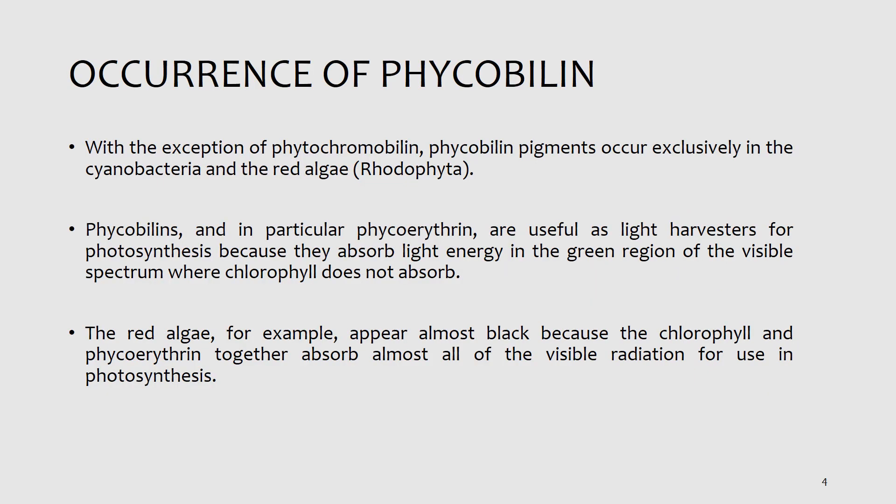Phycobiliin pigments are not found in higher plants, but occur exclusively in the cyanobacteria and in the red algae, where they assume a light harvesting function in photosynthesis. Phycobiliins, and in particular phycocyanin, are useful as light harvesters for photosynthesis because they absorb light energy in the green region of the visible spectrum, where chlorophyll does not absorb, as shown in the previous slide.